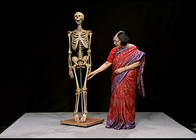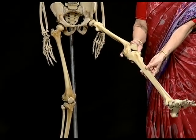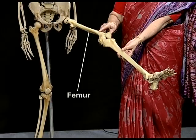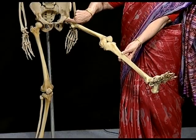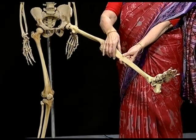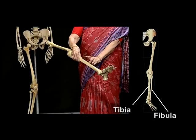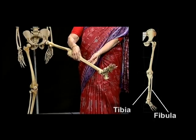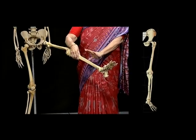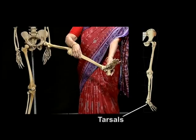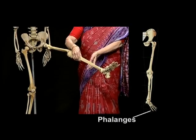Coming to the hindlimb attached to the pelvic girdle — this is the leg, this is the femur. The leg also has 30 bones. The femur has a head which is fixed in the acetabulum cavity of the pelvic girdle, allowing movement. Then the knee, and after the knee two bones: tibia and fibula. The fibula is the thinner and weaker one towards the small toe, and the tibia is towards the big toe. Similarly to the forelimb, it has 8 tarsals, then 5 metatarsals in the foot, and then 14 phalanges or digits — that makes 30.